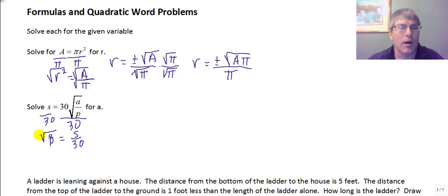Now I want to do the inverse operation of the square root. So now I'm going to square both sides. We get a divided by p equals s squared over 900.